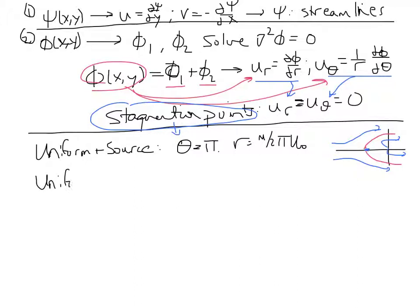We did uniform flow plus a sink, in which case we found that theta is equal to zero, and r is equal to the absolute value of m over 2 pi u zero. A little different from how I presented it in lecture. I think there was some sign confusion with the way I did it. So I'll put absolute value of m, so r is clearly positive.